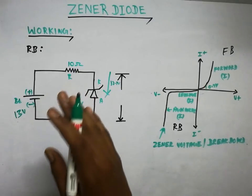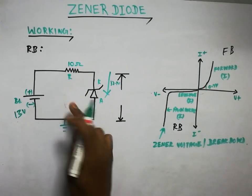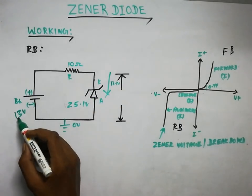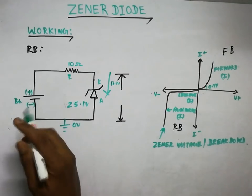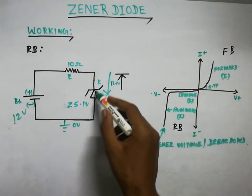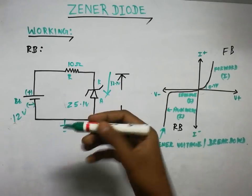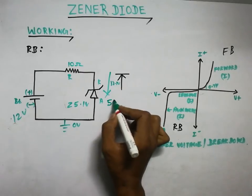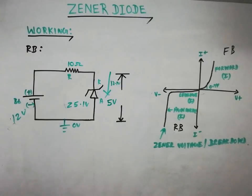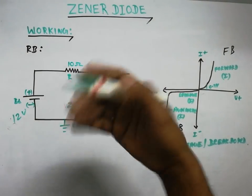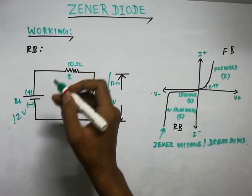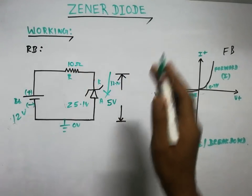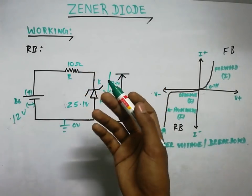For example, if we have a 5-volt Zener diode connected in a circuit, the output across the Zener is maintained at 5 volts. The remaining voltage is dropped across the series resistor. This is how voltage regulation works — the remaining voltage dissipates through the resistor, and the load receives a stable 5-volt supply.